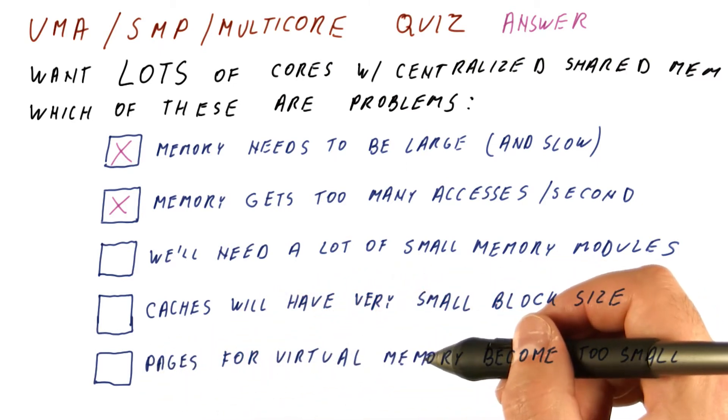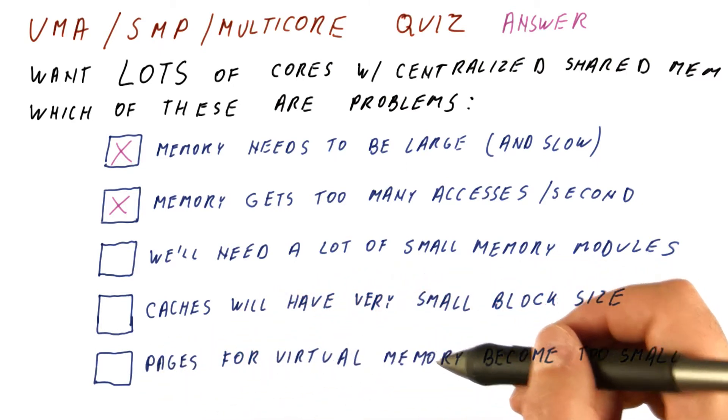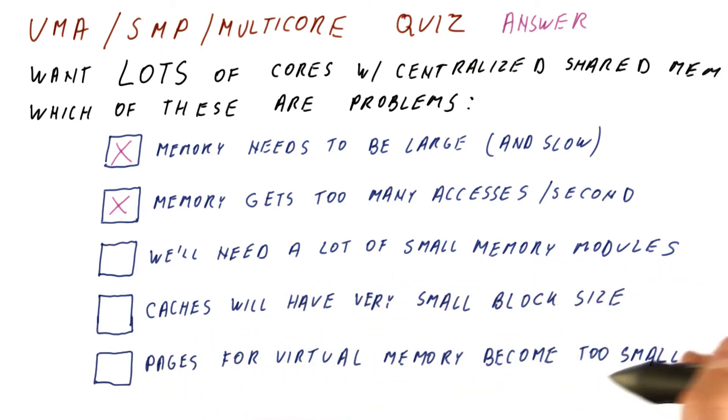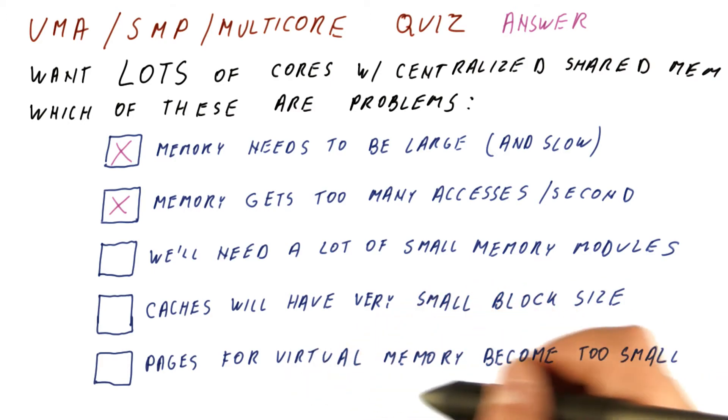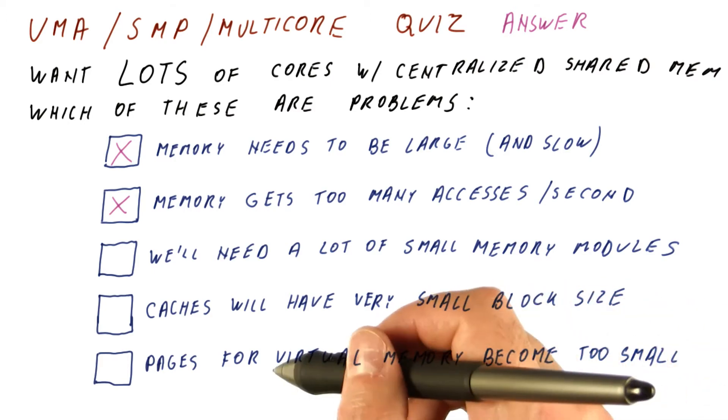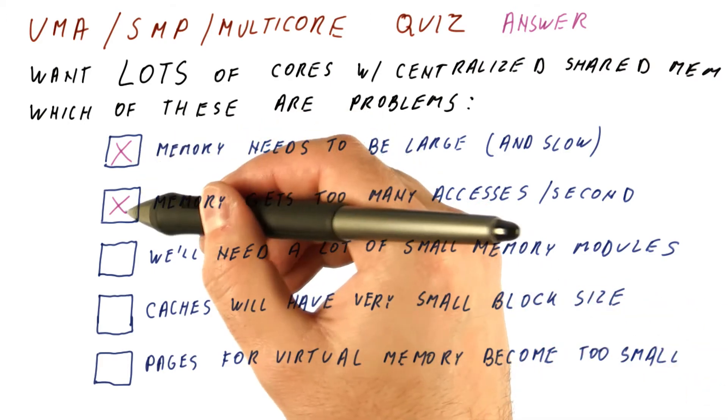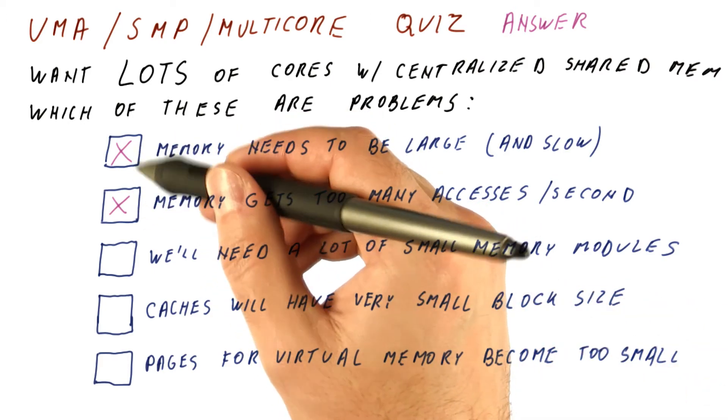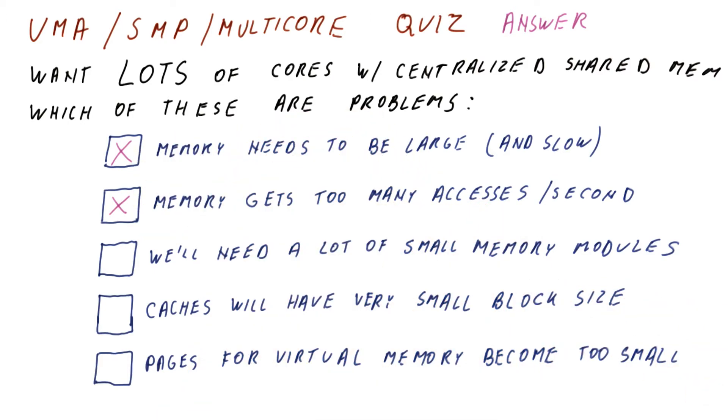Having more or fewer cores doesn't affect the page size in virtual memory. So the only options you should have selected are the first two.